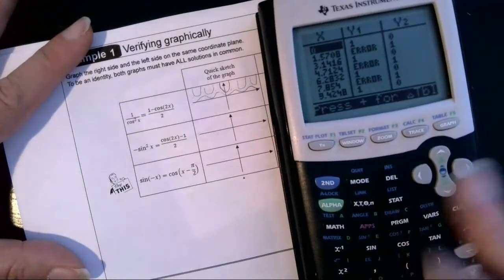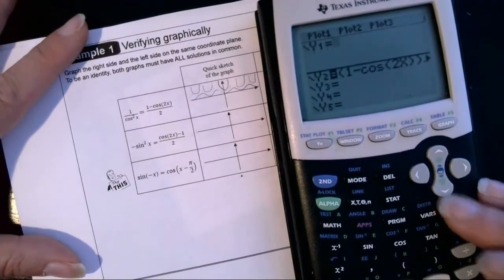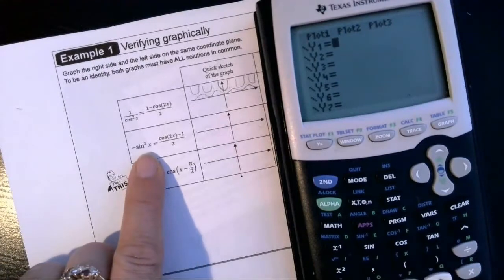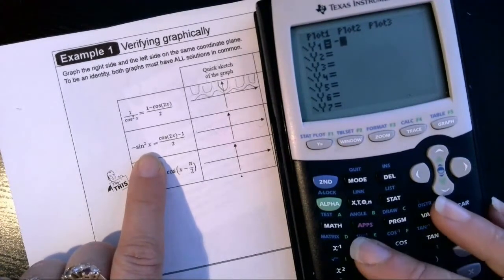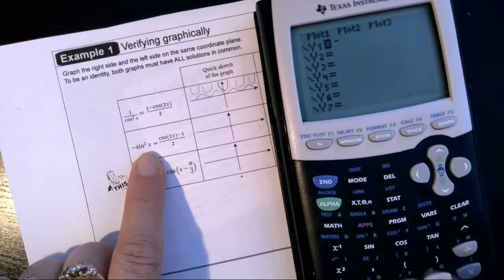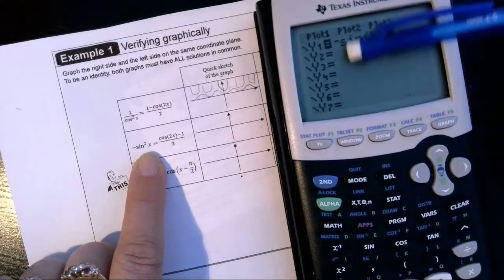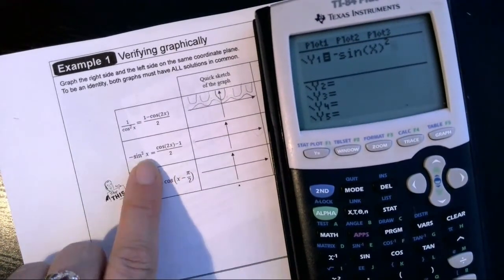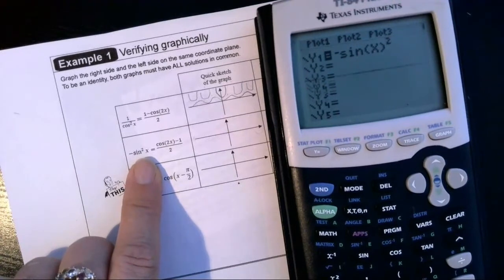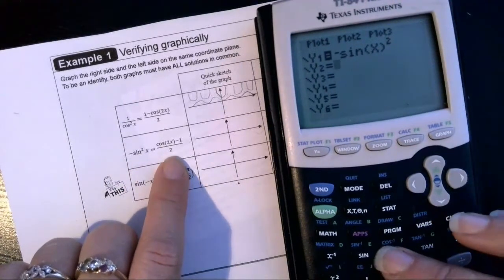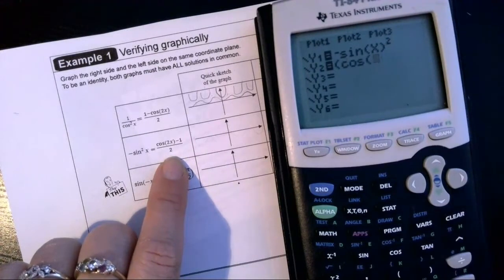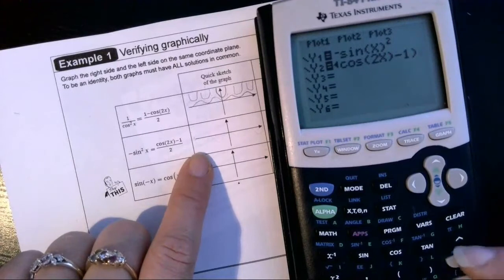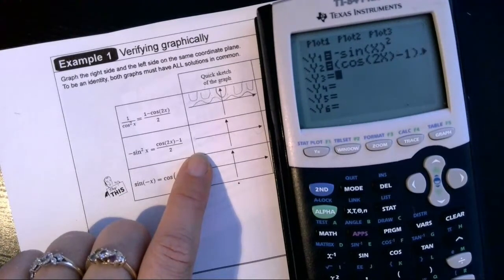So let's try the second example here. We'll clear out the y1 and the y2. And then in y1, we're going to enter the left side. So negative sine squared of x will be negative sine x, close the parentheses on the sine of x, and then square on the outside of the parentheses. That's the negative sine squared of x. Then we press enter, and we're going to do parentheses around our numerator. So cosine of the quantity 2x minus 1, close parentheses on the numerator, and divide that quantity by 2.